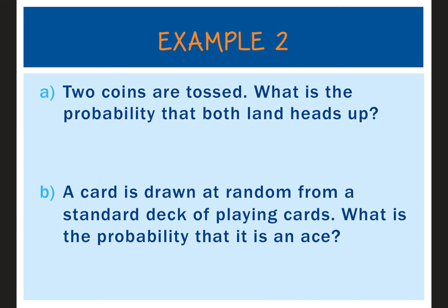Example 2A: two coins are tossed. What's the probability that both land heads up? We already found this sample space: double heads, double tails, heads-tails, and tails-heads — four possible outcomes in the denominator. Out of our sample space, it only happens once where you get heads up twice, so the probability is 1 out of 4 possible outcomes.